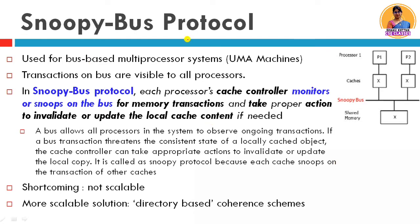The Snoopy Bus Protocol is used for bus-based symmetric multi-processor systems. These processors are connected to a shared bus. There are local caches for each processor and a shared memory where consistent data is located. This bus is called the Snoopy Bus. 'Snoopy' means to investigate, monitor, or observe — so the bus is monitoring transactions.